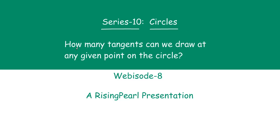Now friends, here today we are going to find out how many tangents can we draw at any given point on the circle. In the last webisode, we saw that the definition of a tangent is that a tangent is such a line that touches the circle only at one point. But today it is a little bit different topic. Today we are going to pick a point on a circle and find out how many tangents can we draw at that particular point.